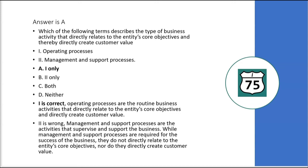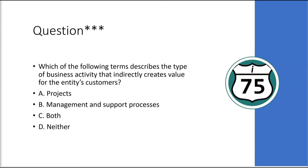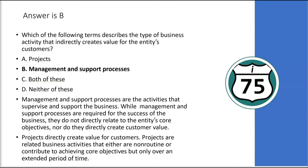With questions on business processes on the exam, it often comes down to one or two key words. This area is going to be something of a word game. The important term in that question was 'directly create customer value' — those are operating processes, and if projects had been offered as a choice, you would pick that too. How about this: which of the following describes the type of business activity that indirectly creates value for the entity's customers? That would be management and support processes, because projects directly create value — they're non-routine or contribute to core objectives over an extended period.